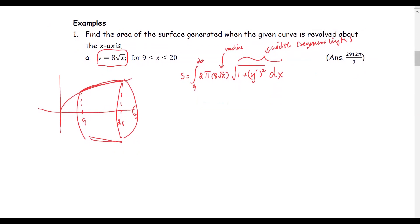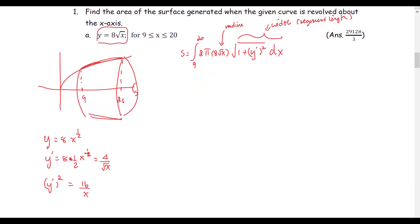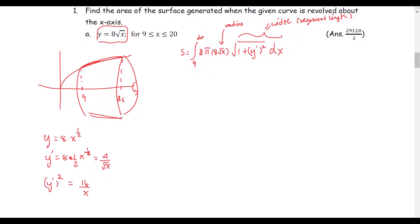We need y prime and y prime squared. Since y equals 8 times square root x, or 8 times x to the power one half, y prime is 8 times one half times x to the negative one half, which simplifies to 4 divided by square root x. So y prime squared equals 16 divided by x. Back to the formula: s equals the integral from 9 to 20, with 8 pi times 2 as constants brought outside to give 16 pi.